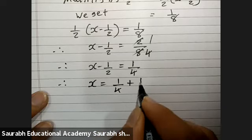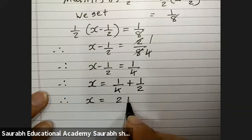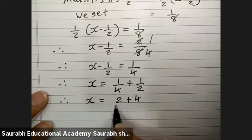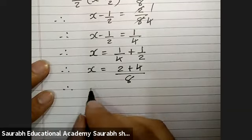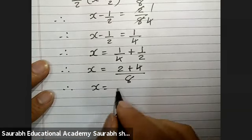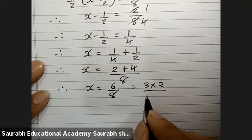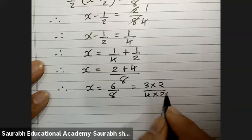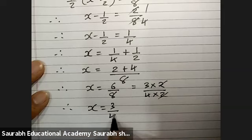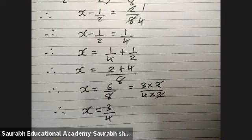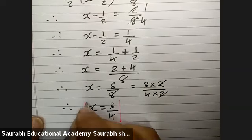1 by 4 plus 1 by 2. LCM is 4. 4 plus 2, 6 upon 8. Now, you can reduce 3 to the 4, 2 to cut. Final answer will be 3 upon 4.